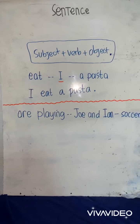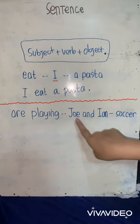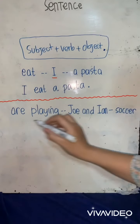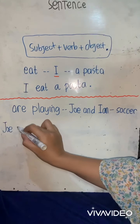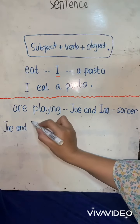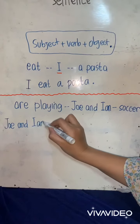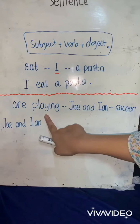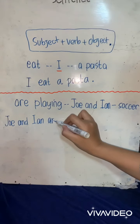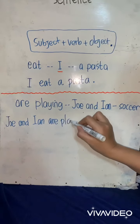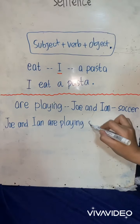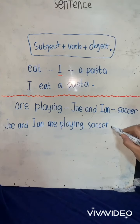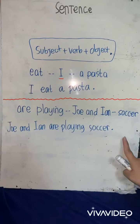Start with a capital letter. Which one is the capital letter? Joe and Ian — that's the subject. Which one is the verb? Are playing soccer. Joe and Ian are playing soccer. Don't forget to put a full stop at the end of the sentence.